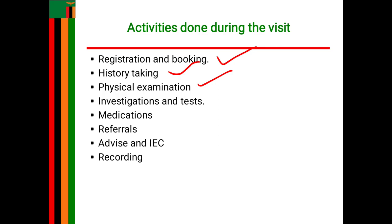After palpation you auscultate to feel for the fetal heart rate for one minute, noting the rhythm and regularity of the heartbeat. The normal fetal heart rate is between 120 to 160 beats per minute. You can expect to feel the fetal heart rate from at least the 20th week of gestation.